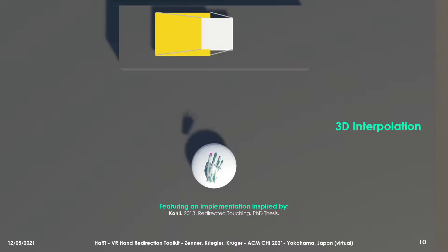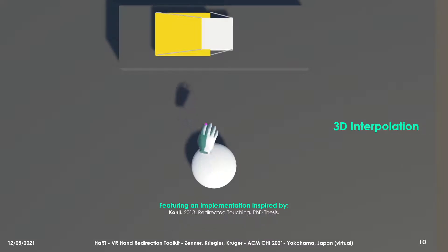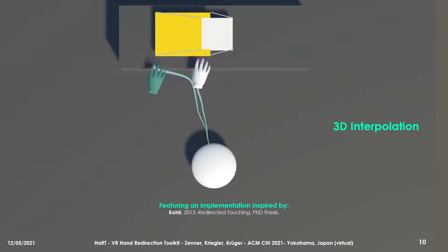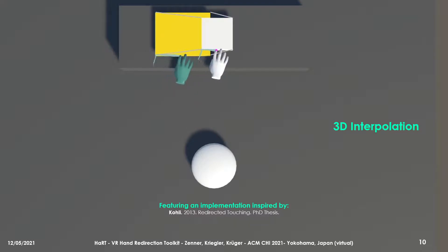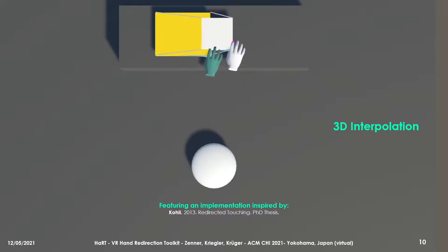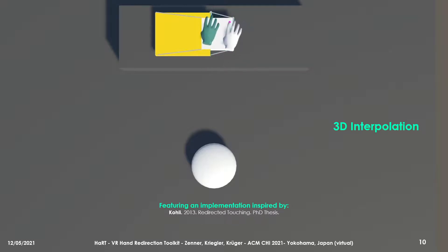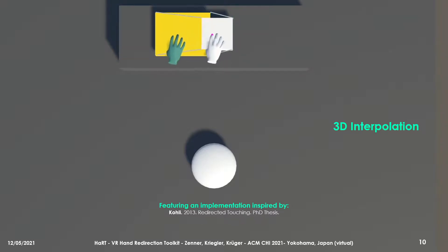Additionally, support for 3D hand offset interpolation techniques enables users of the toolkit to map virtual geometries onto physical geometries that differ in shape, allowing users to receive haptic feedback while exploring virtual surfaces.